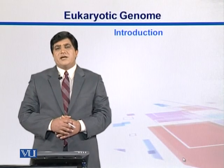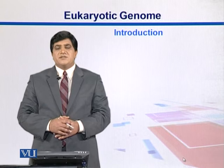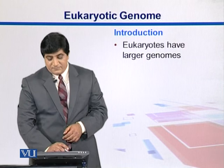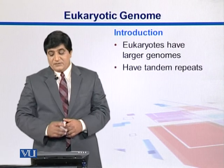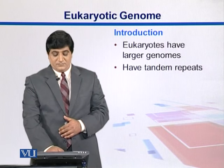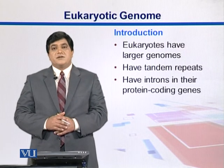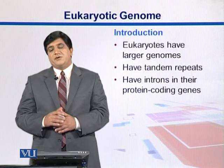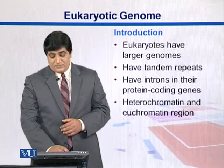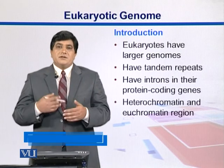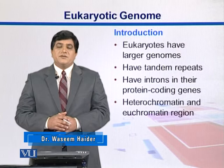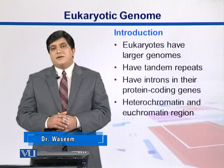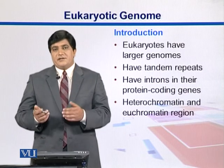As we have seen, prokaryotes are simple genomes; in comparison, eukaryotes are relatively complicated. Eukaryotes have larger genomes, they have tandem repeats, and their introns are present in between the exons, which are the protein coding regions within the genes. Eukaryotes have a more complicated genome, so in the chromosomes the DNA is grouped as heterochromatin, a densely packed region, and euchromatin, which is a lightly packed region.